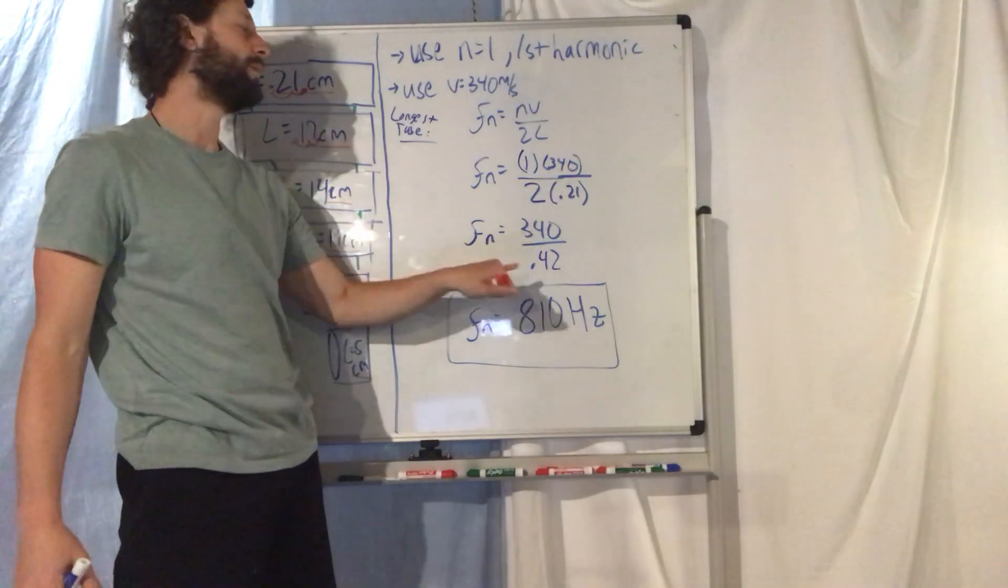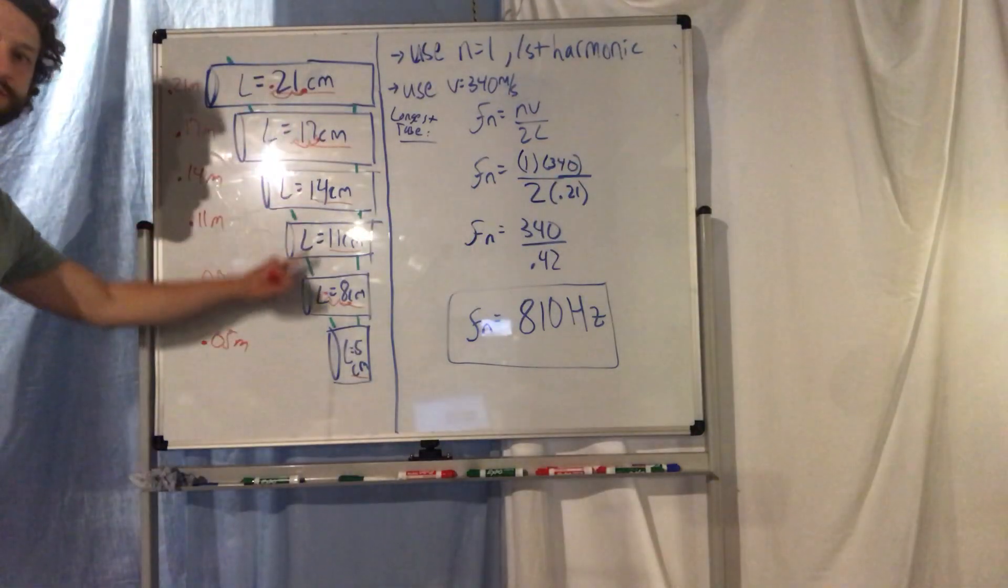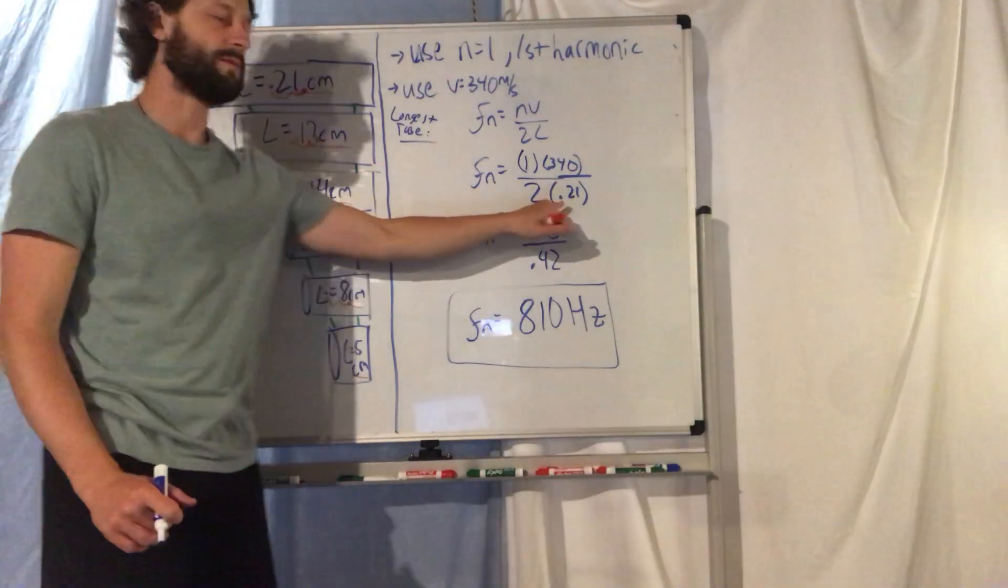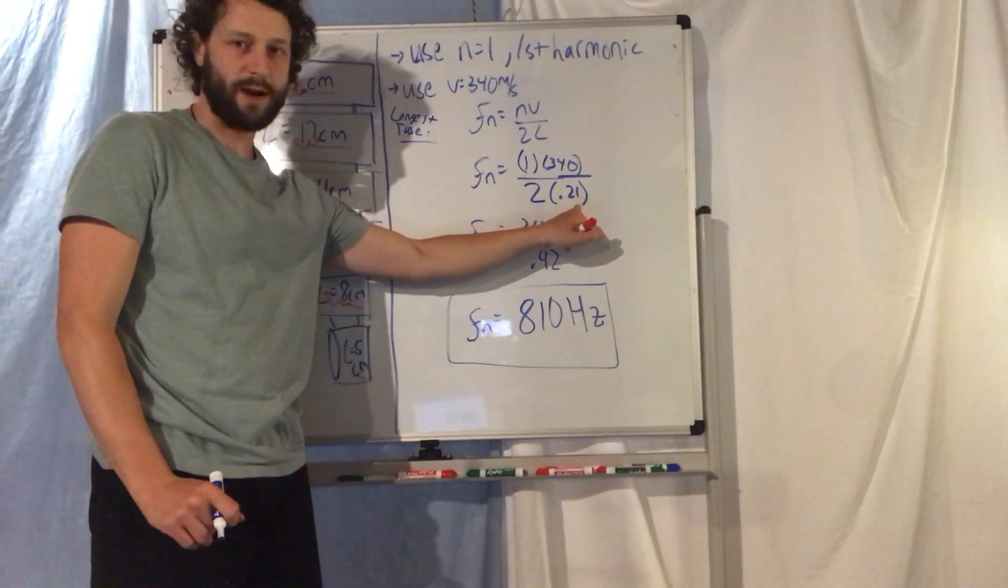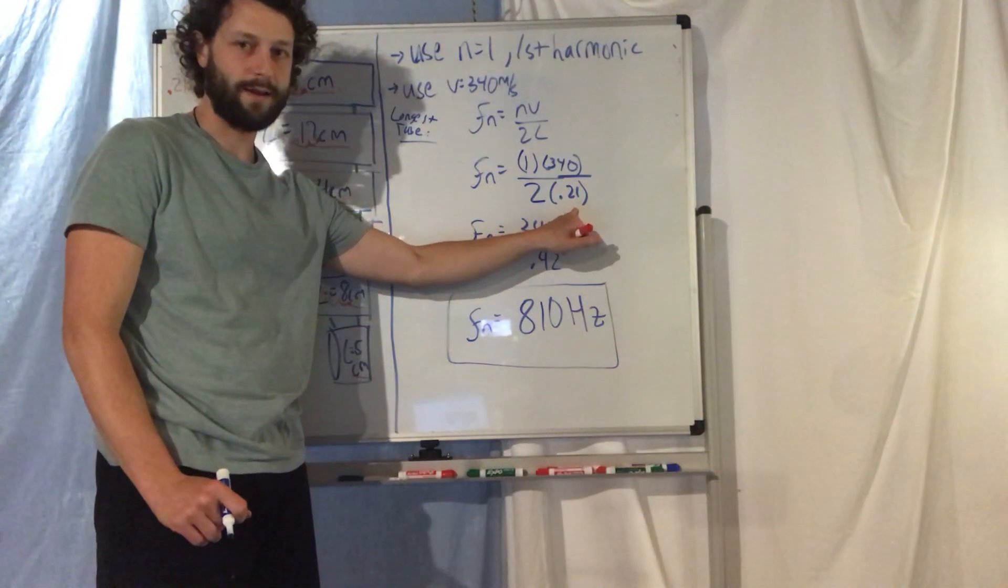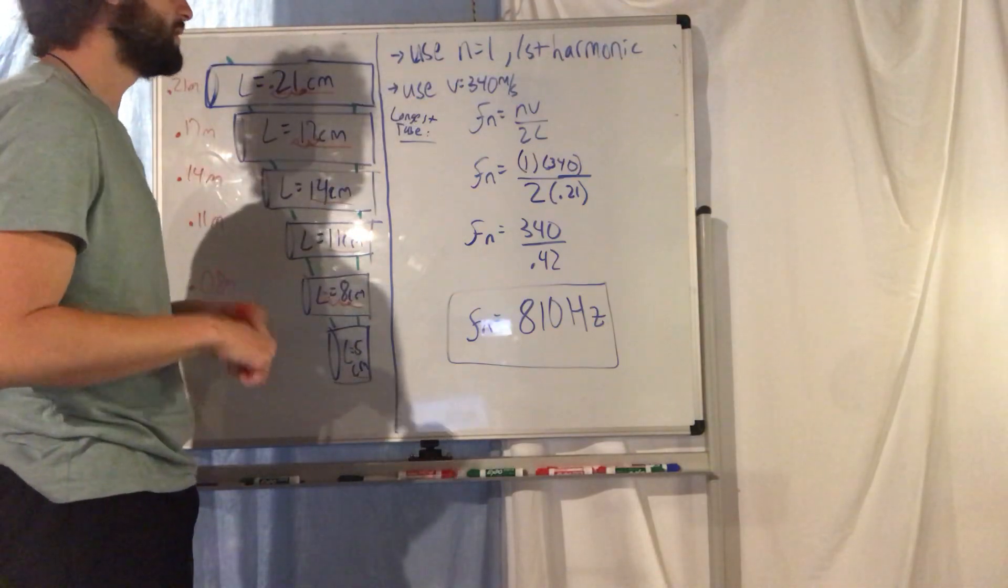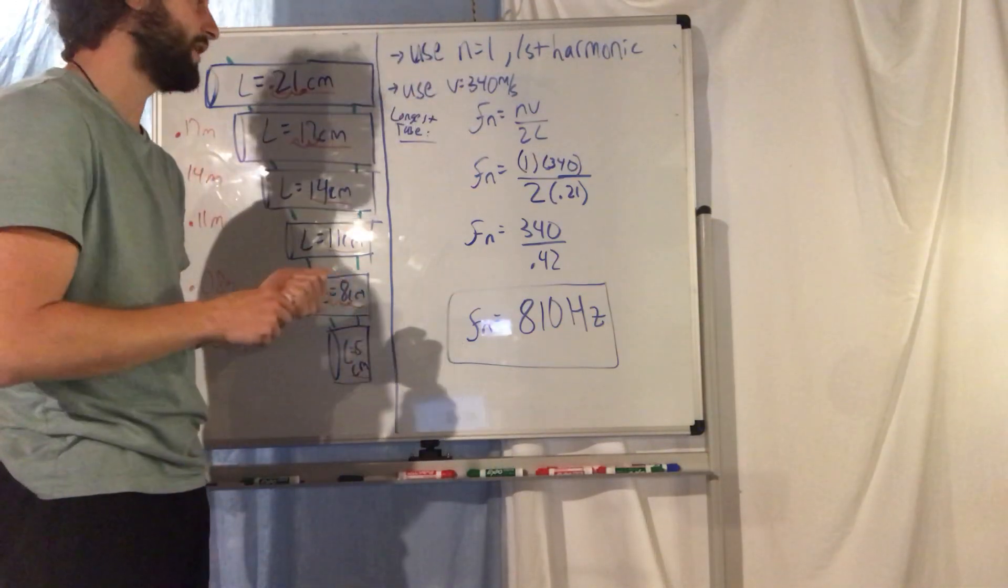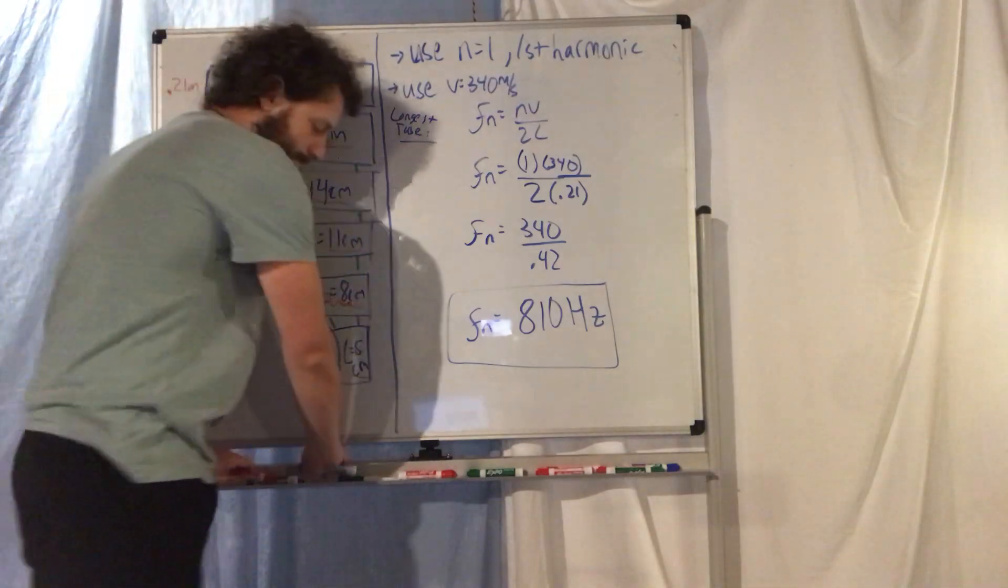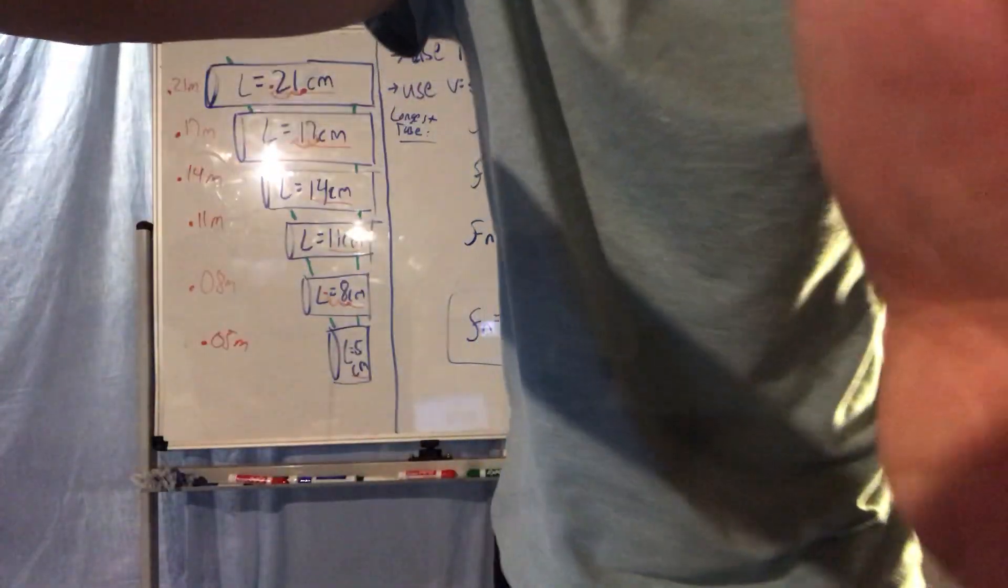But because the length of each tube is different, every time you do it for the next tube the length on the bottom will be a different number. So when you're done, submit a picture of your calculations.